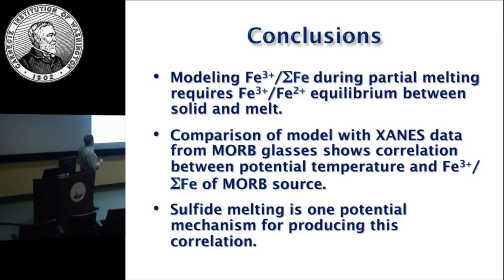To conclude: modeling ferric over total iron during partial melting requires ferric-ferrous equilibrium between solid and melt — you can't just use a partition coefficient; you also need that equilibrium constraint. Comparison of model results with XANES data from MORB glasses shows a correlation between potential temperature and ferric over total iron in the MORB source. Sulfide melting is one potential mechanism for producing this correlation. Thank you for your attention.